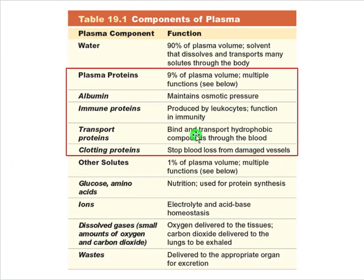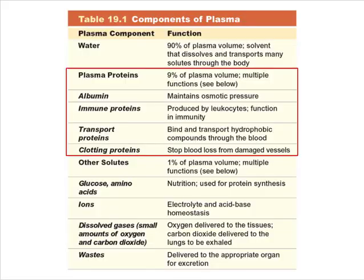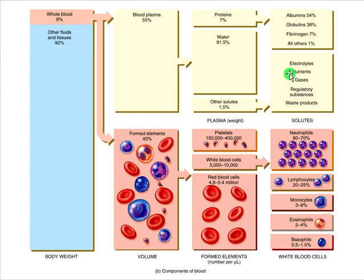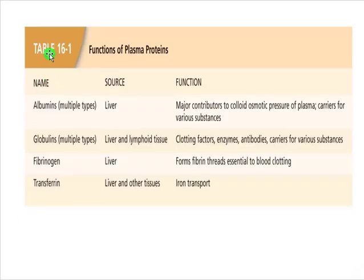Another category is fibrinogen, which we'll look at later in the clotting process — there are various elements in blood that help us stop bleeding if something happens. Here's another slide showing albumin, various globulins, fibrinogen, and transferrin, which we can talk about later.